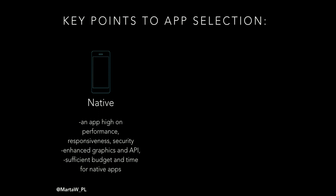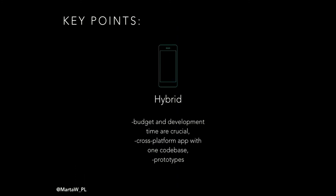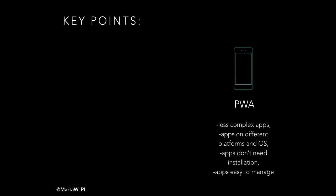So here are the key points for app selection. If you want a fast, stable application, need enhanced graphics APIs, and have sufficient budget and time, the best solution is native apps. If budget and time are crucial, focus on hybrid apps — you can easily prototype and use one code base to create a cross-platform app. For PWA, if your application is not too complex, if you don't need the features shown in the table, and if you don't need an installation flow, then PWA will be great for you.